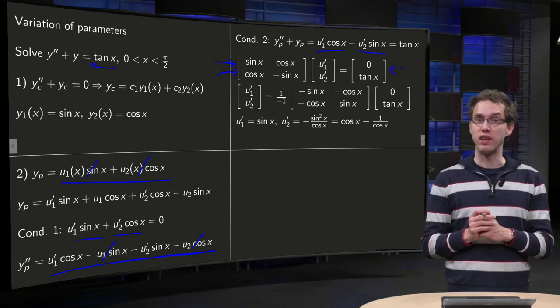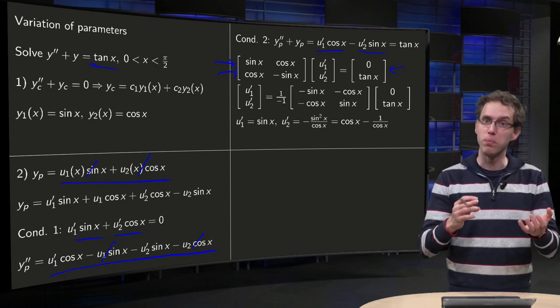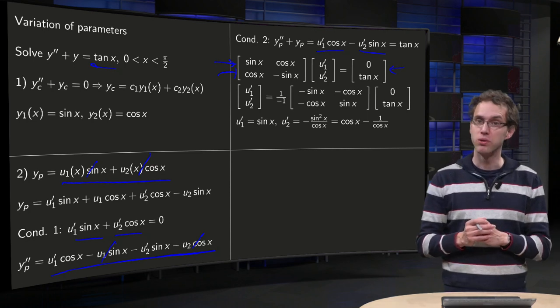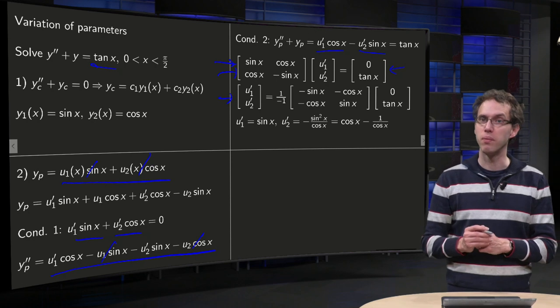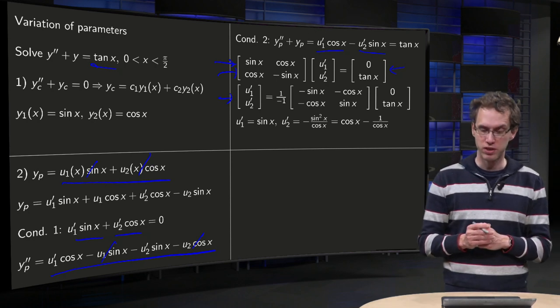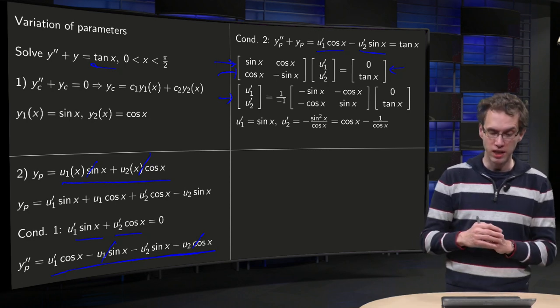Why do we want to write it like this? Well, we want to solve for u₁' and u₂'. So we can do that by using the inverse matrix. Then we get u₁', u₂', invert the matrix with the sin and the cos. Determinant equals -1 equals [0, tan(x)].